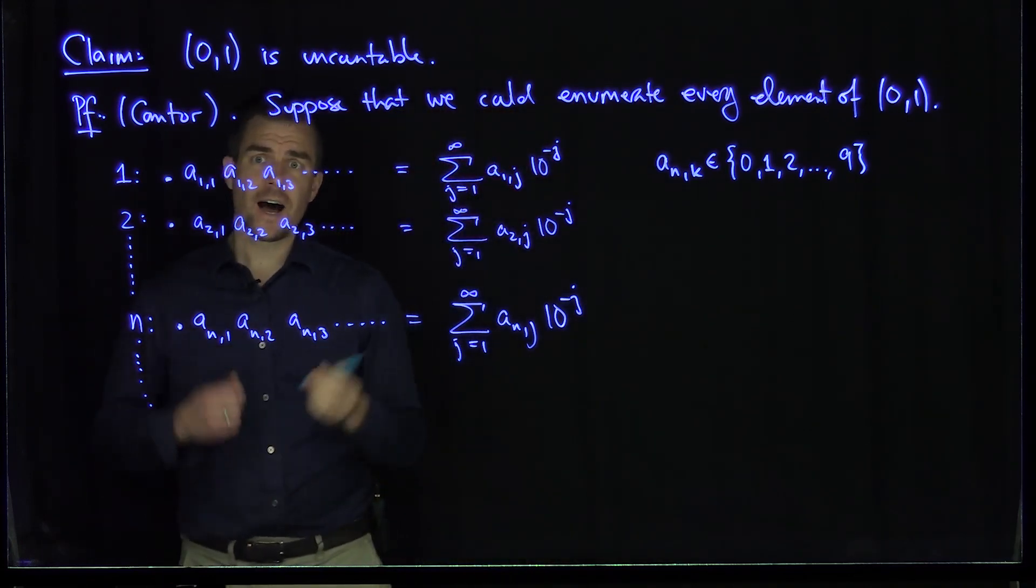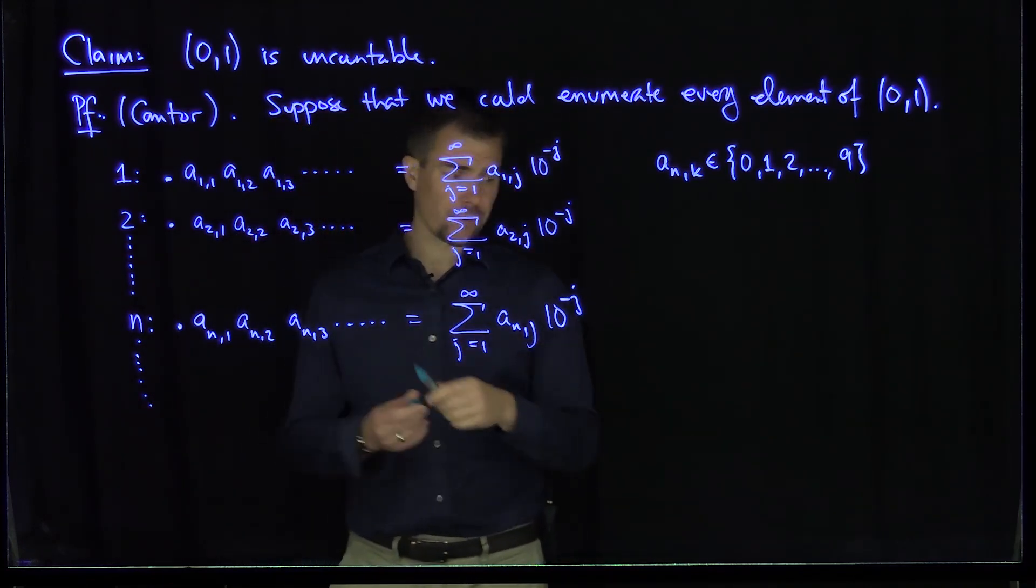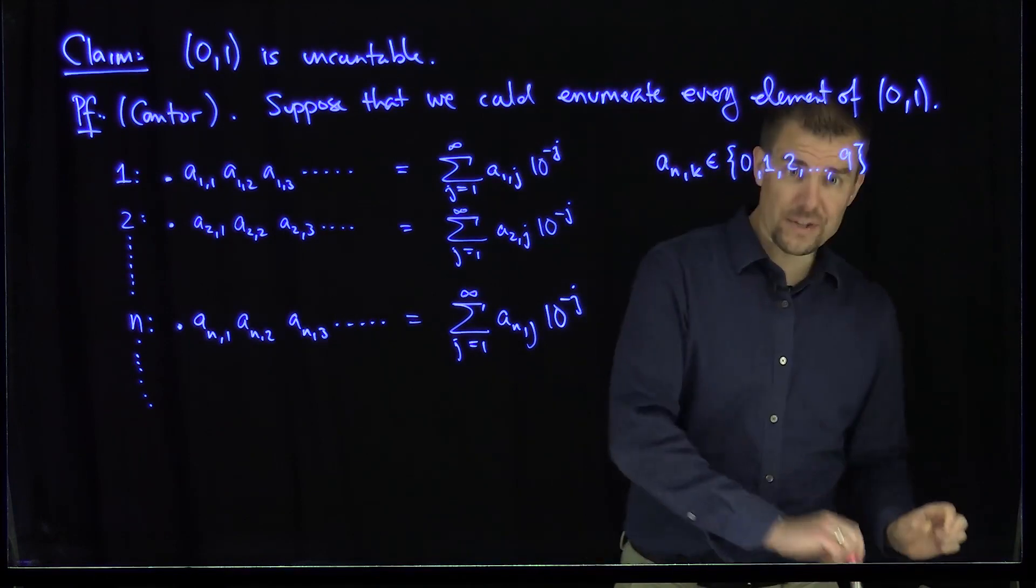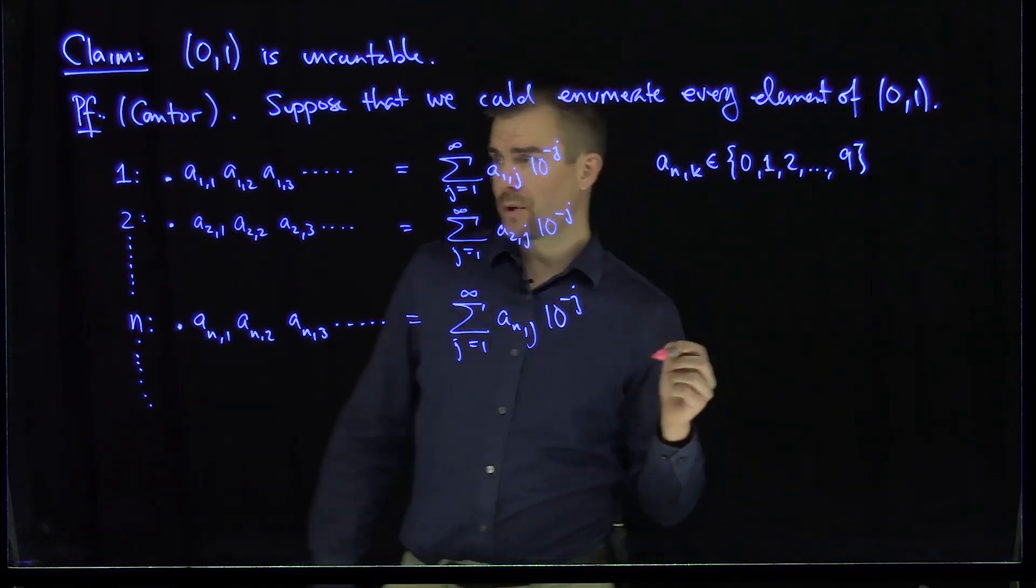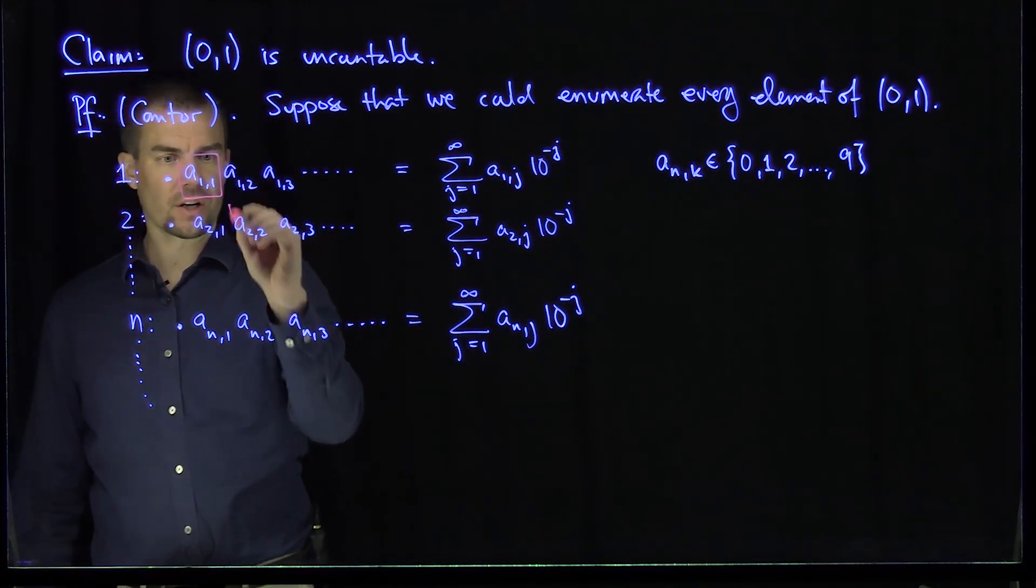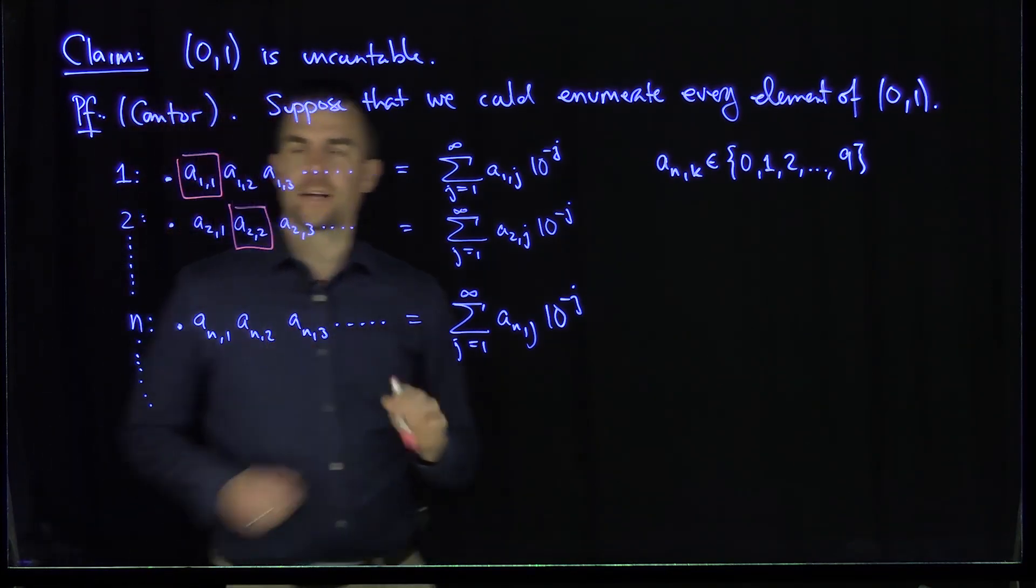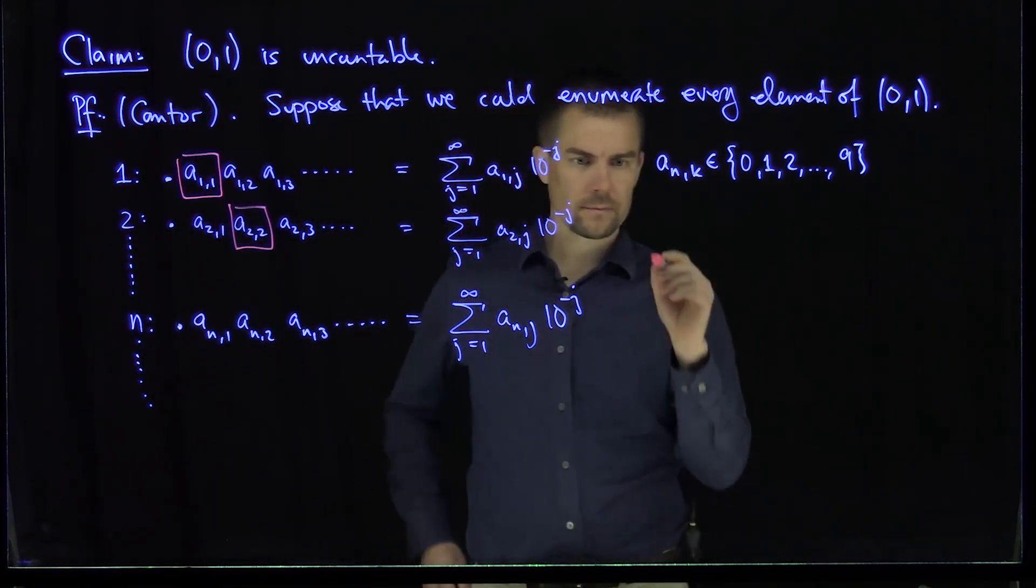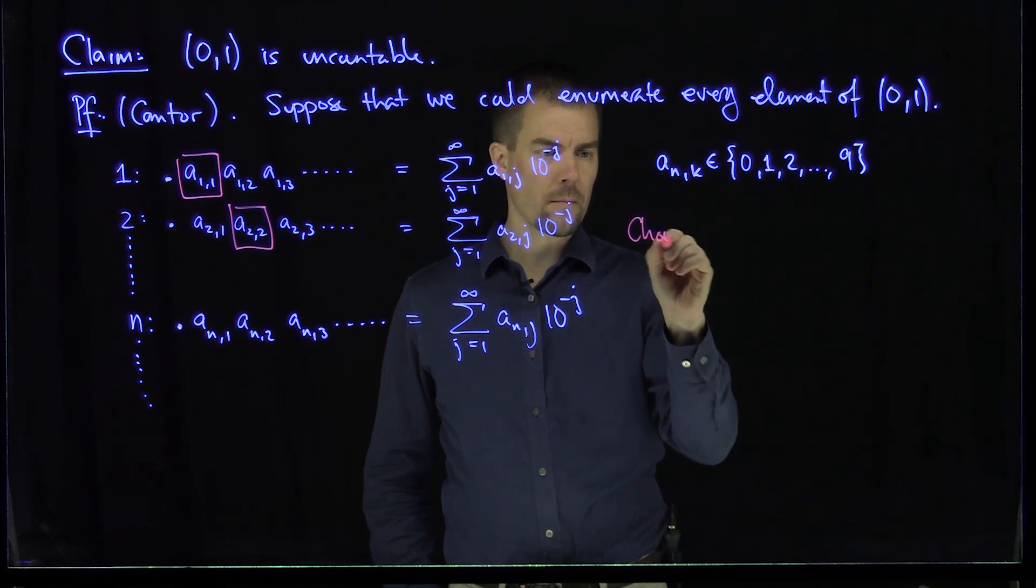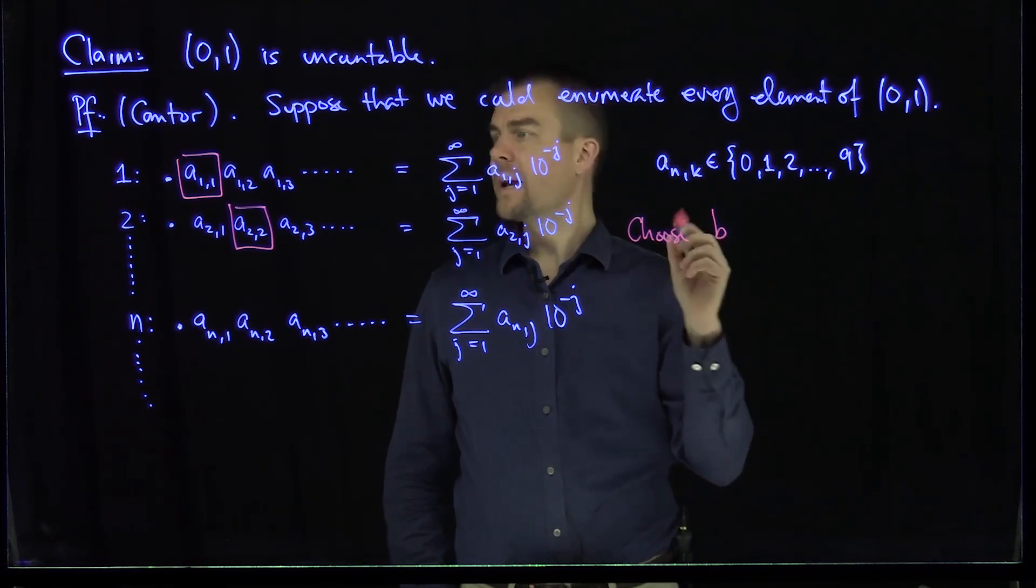So what I can do is the following. I can construct, following Cantor's reasoning, a number which is not in the set. We'll consider the diagonal. This is why it's called the diagonalization argument. Choose b_k_k to be a number